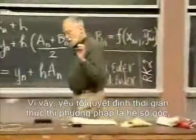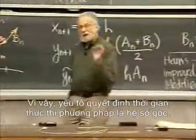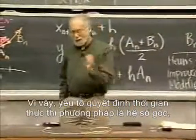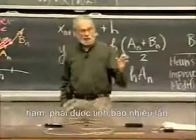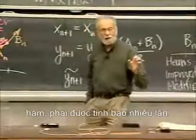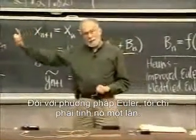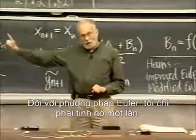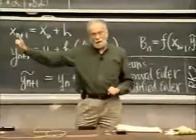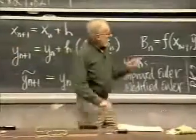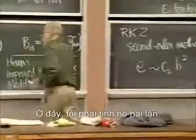The thing that controls how long a method runs is how many times the slope — the function — must be evaluated. For Euler, I only have to evaluate it once. Here, I have to evaluate it twice.